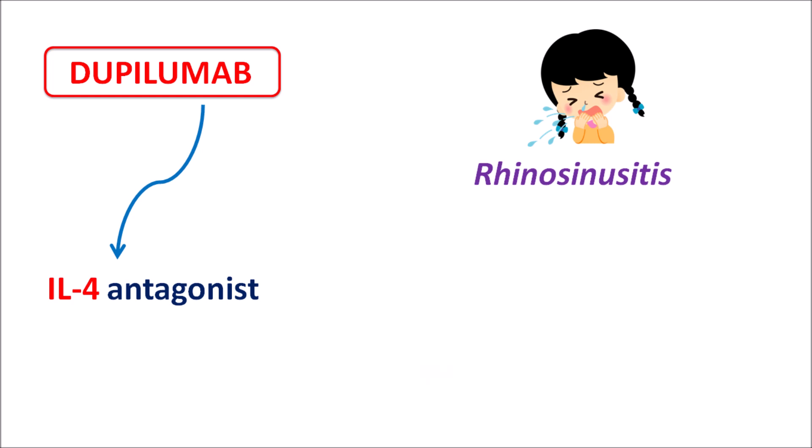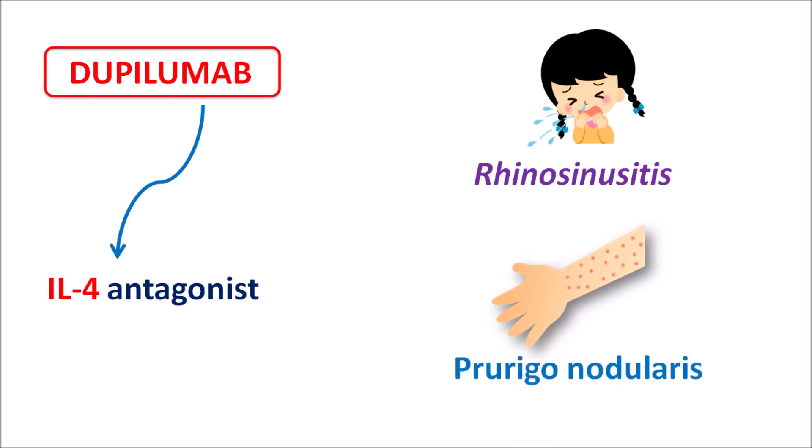Similarly, prurigo nodularis — where skin nodules are observed due to pruritic conditions resulting in itching and swelling of the skin — can also be treated. In all these conditions, dupilumab can be used as an IL-4 receptor antagonist.